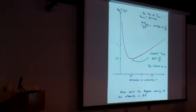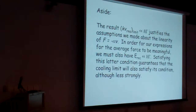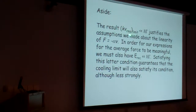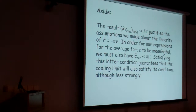That's the Doppler cooling limit. When you calculate what the cooling limit is, you justify the assumption that kv — the Doppler shift for these atoms — was in fact small compared to the detuning and the line width, for essentially any of the atoms that we typically laser cool. Sometimes you violate this condition and have to treat things differently, but for most atoms — cesium, rubidium, sodium, strontium — it satisfies this condition. The velocity you end up with is such that the Doppler shift is much smaller than the line width, and the detuning is always chosen to be comparable to or larger than the line width.